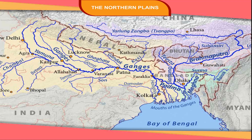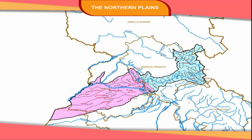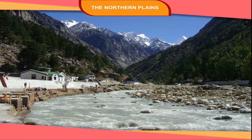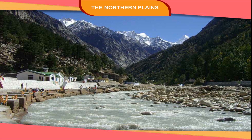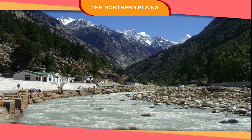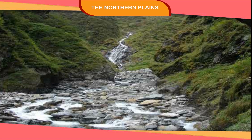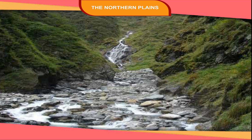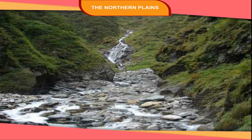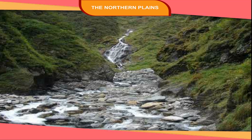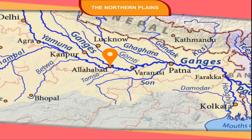The Ganga basin receives more rainfall as compared to the Satlaj basin. The holy river Ganga originates from a glacier in the Himalayas called Gangotri. The Yamuna rises from a glacier called Yamunotri and joins the Ganga at Allahabad.